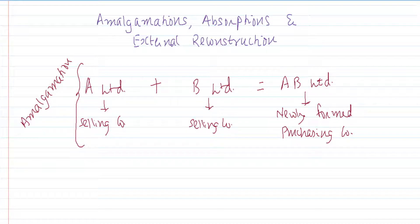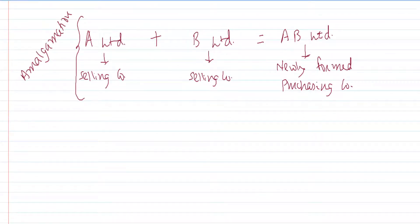Vodafone and Idea is one of the best examples here. The two companies merged and were taken over by a new company, Vodafone Idea Limited. From the name itself, it is clear that this is an amalgamation of Vodafone and Idea. So, in amalgamation: two or more existing selling companies sell away their business and are taken over by a newly formed purchasing company. Concentrate on 'newly formed' — there must be a minimum of two selling companies.